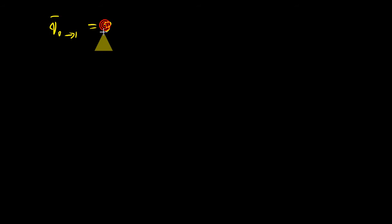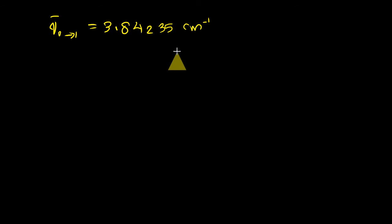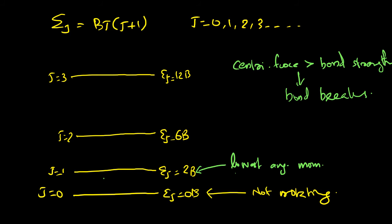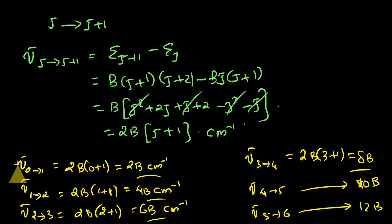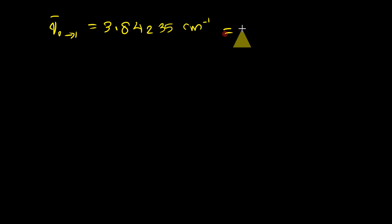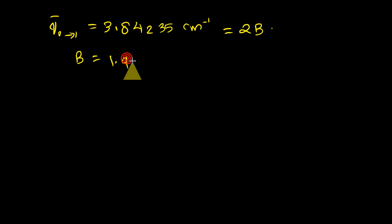How can we calculate the bond length? We are given ν̄ (0→1), the wave number corresponding to the transition from J equals 0 to J equals 1, that is equal to 3.84235 centimeter inverse. We already know that ν̄ (0→1) equals 2B, so we can equate this with 2B. Therefore, B equals half of this, which is 1.92118 centimeter inverse.